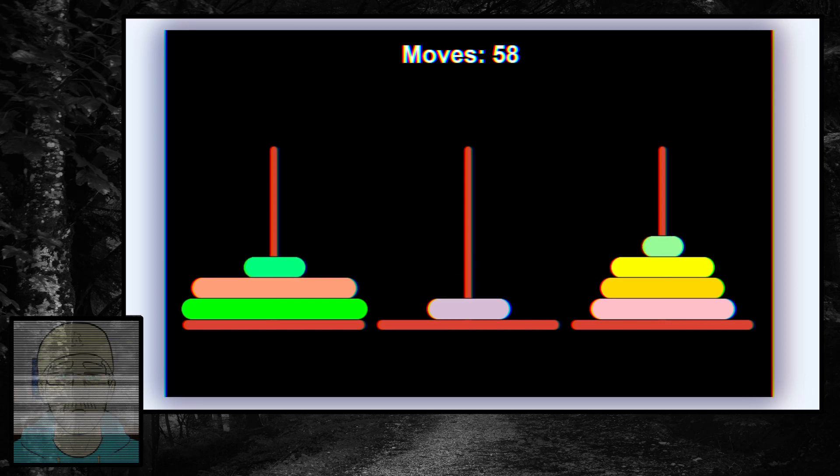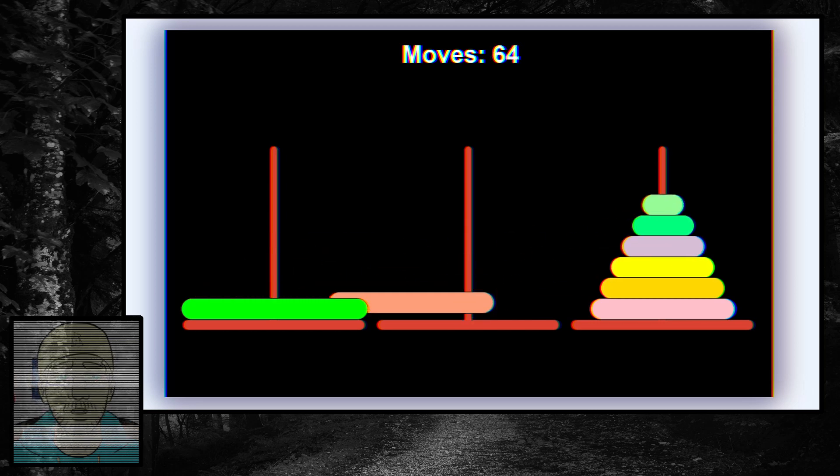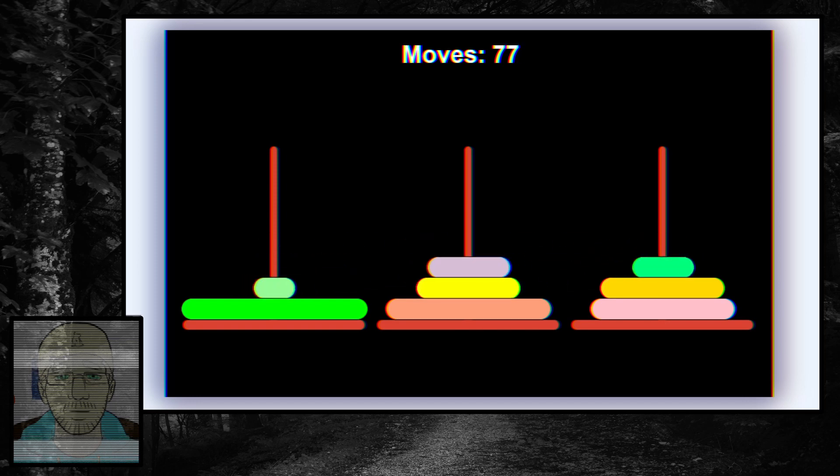So, part 1 of our problem is solved. We know what the minimum numbers of move required to get all the rings from one pillar to another.